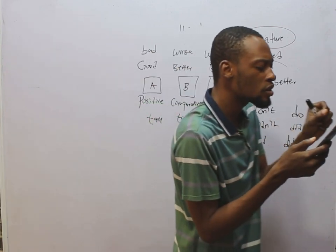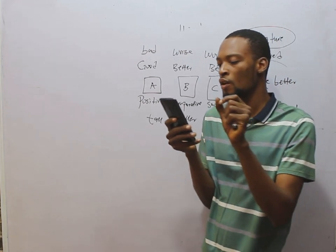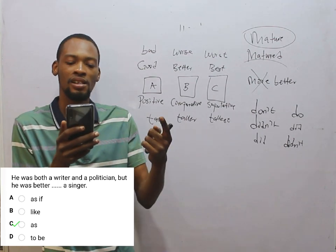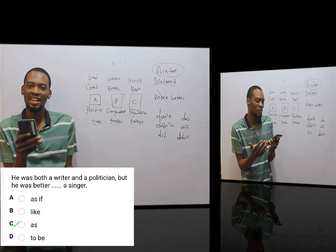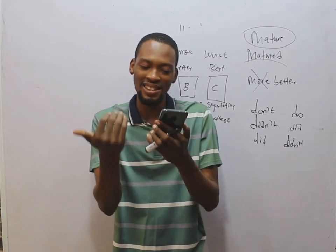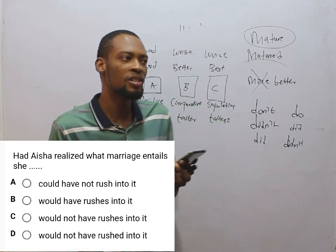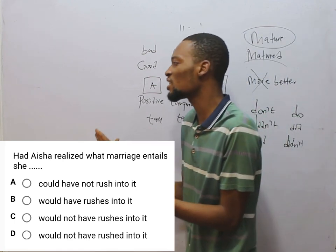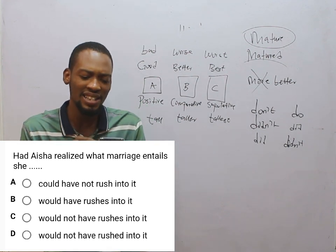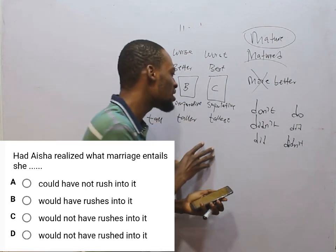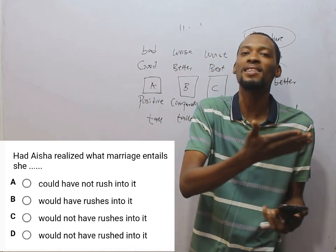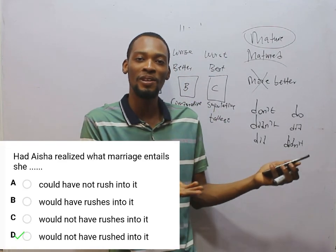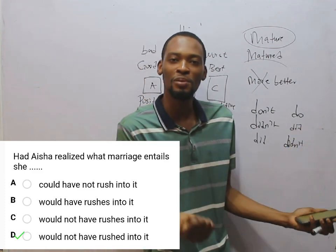He was both a writer and a politician — what was he better as? Dash a singer. The answer is as a singer, not like a singer. Had Aisha realized what marriage entails, she would not have rushed into it — that is the correct option. This is a conditional statement about the past. Had Aisha realized simply means she did not realize what marriage entails, so she jumped into marriage without knowing what it involved.